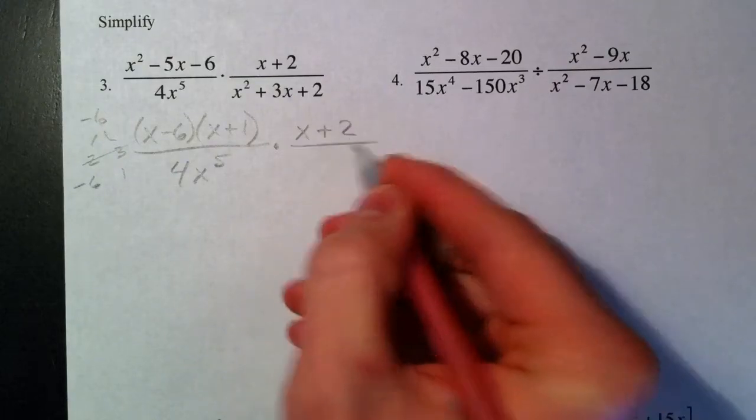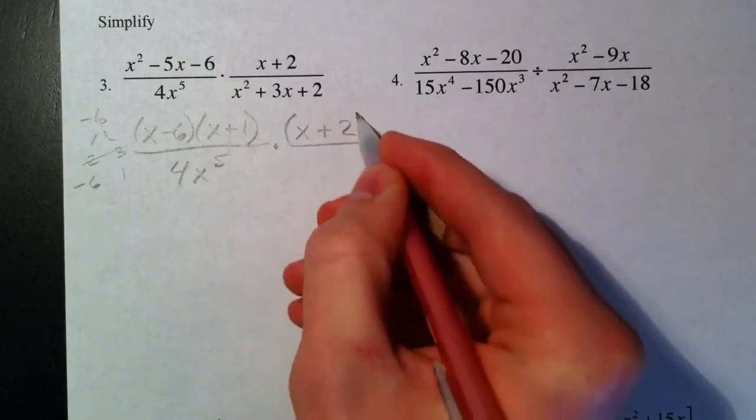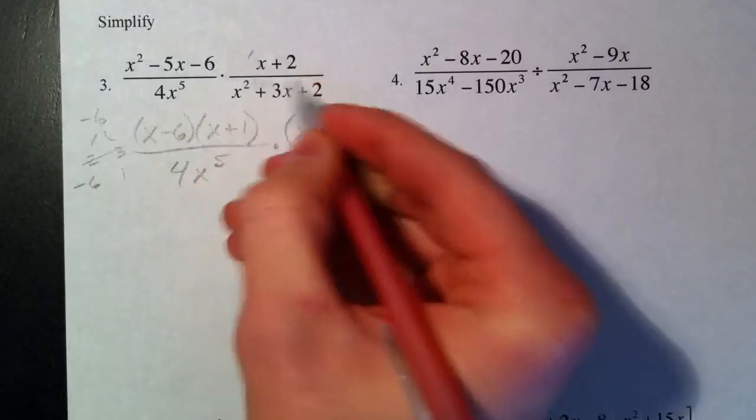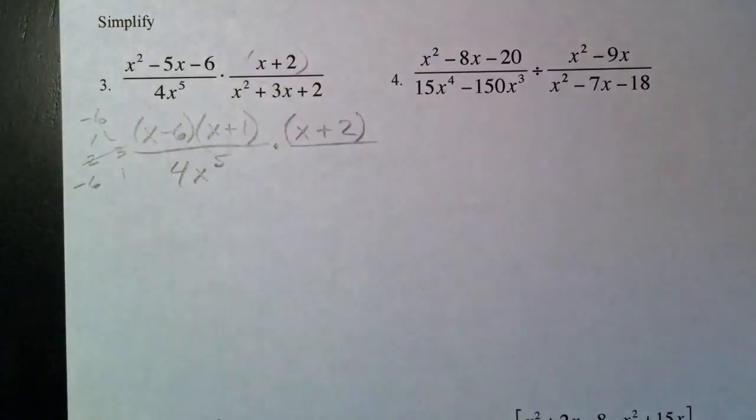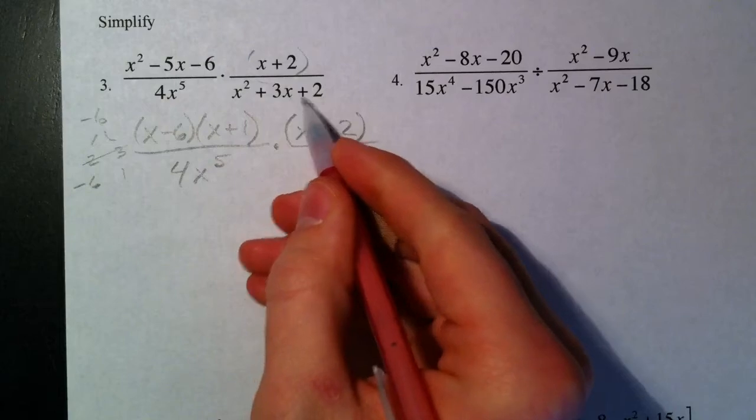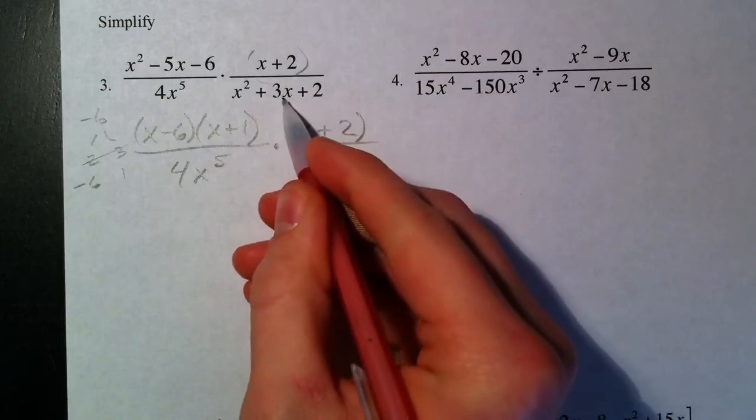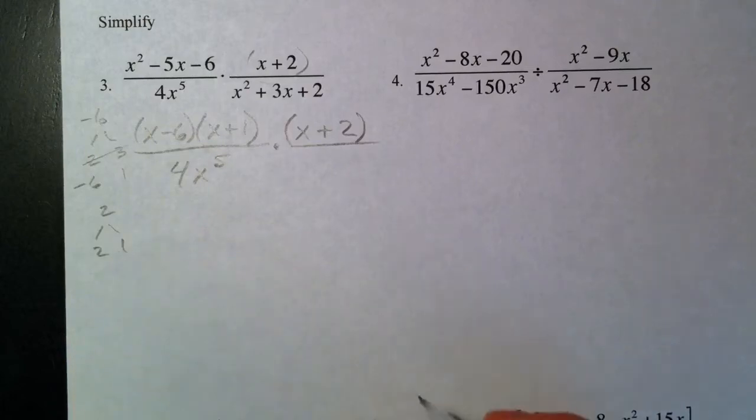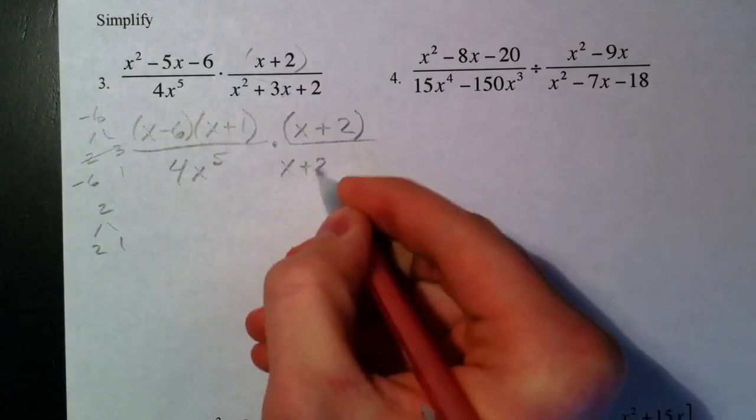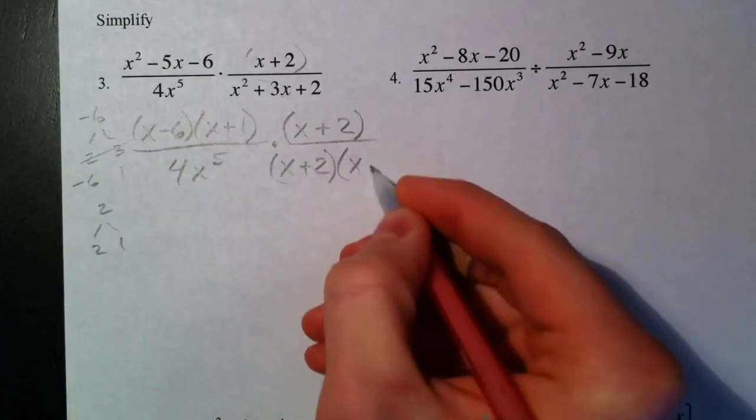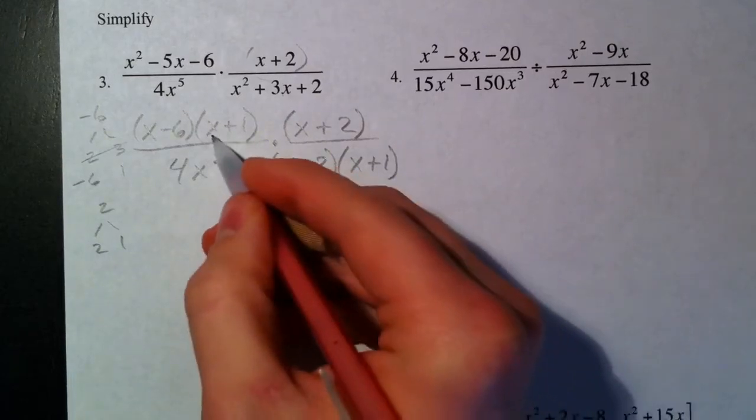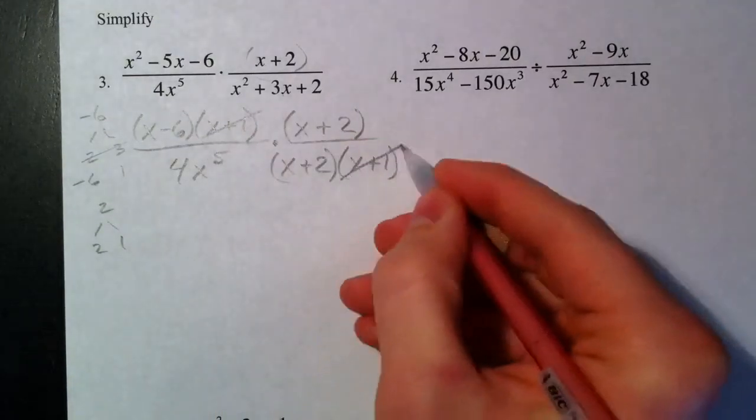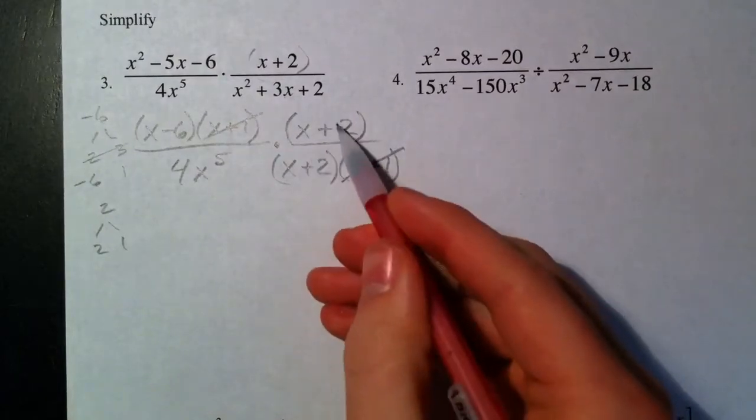The bottom is already multiplied. We've got X plus 2 on top. Over here I'm going to stick this in parentheses because it's being multiplied by that, and so it's already by itself. And then what multiplies to 2 and adds to 3? 2 and 1, so X plus 2, X plus 1.